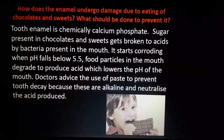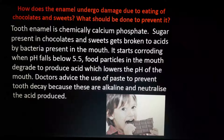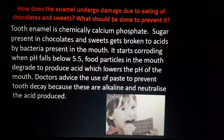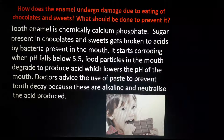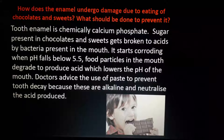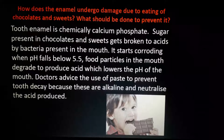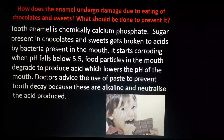How does enamel undergo damage during eating of chocolates and sweets, and what should be done to prevent it? Tooth enamel is chemically calcium phosphate — that is the chemical formula of tooth enamel, same as our bone. Sugar present in chocolate and sweets gets broken down to acids by bacteria present in our mouth. It starts corroding when pH falls below 5.5. Doctors advise using toothpaste to prevent tooth decay because they are alkaline and neutralize the acid produced.